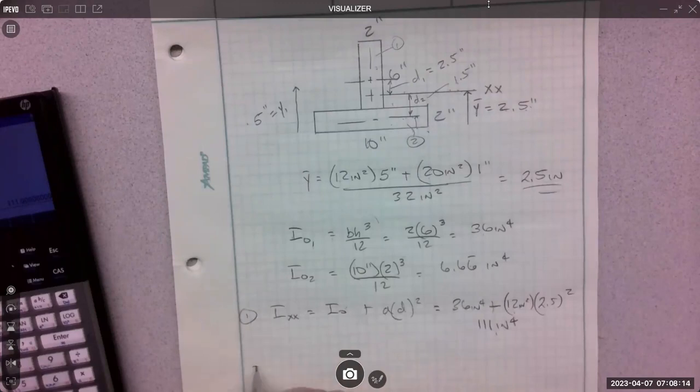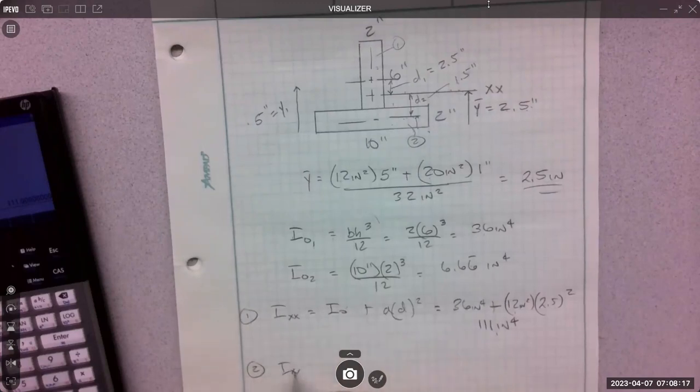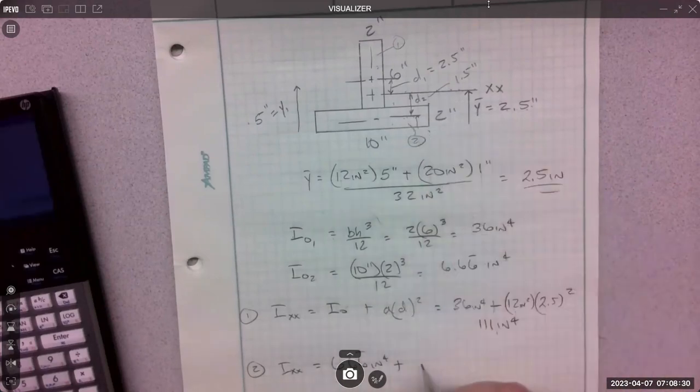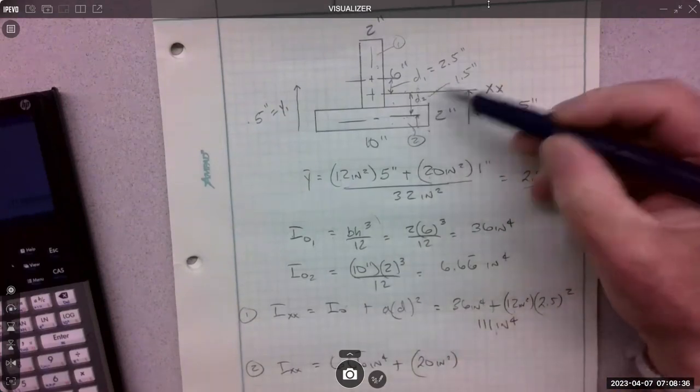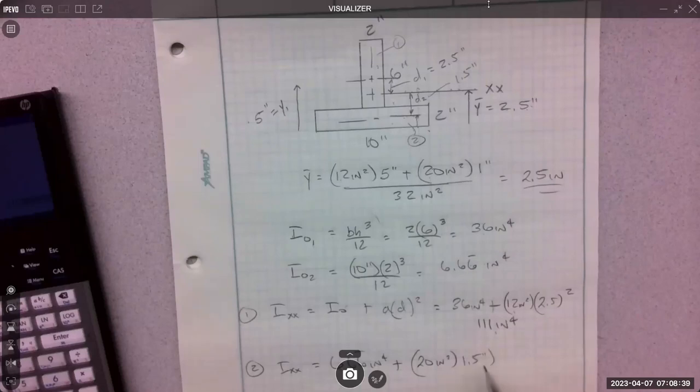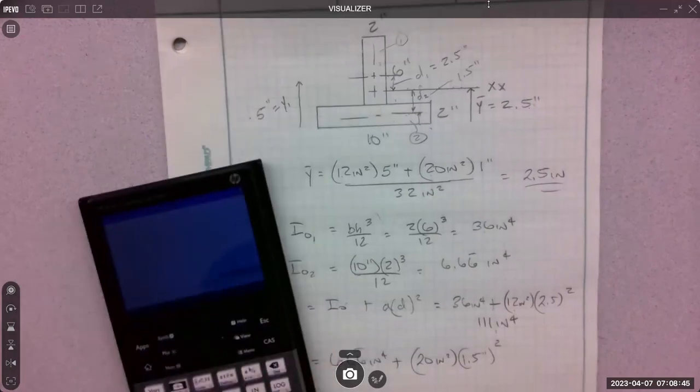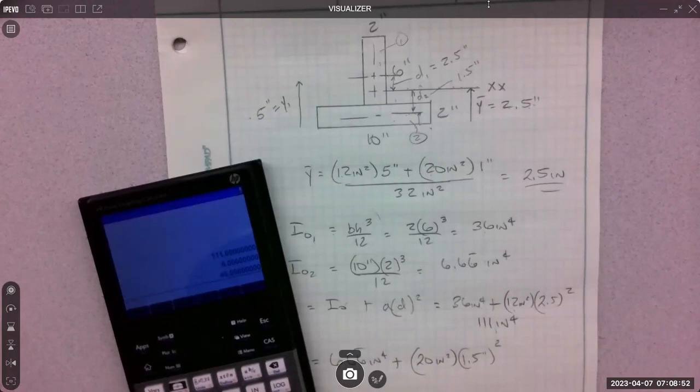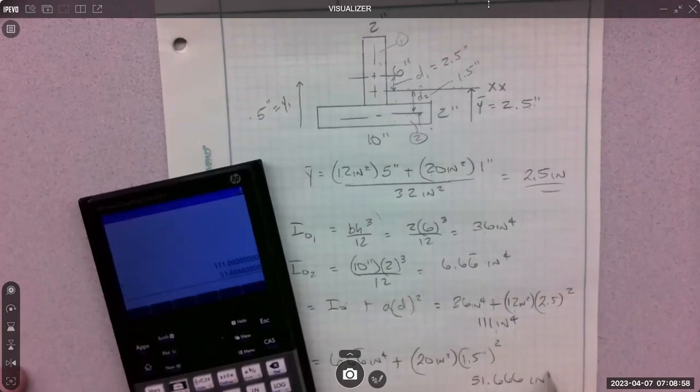So the inertia at this XX axis is going to equal the inertia here, 6.66 repeat, plus its area, 20 inches squared, times its transfer distance, this one, 1.5 squared.